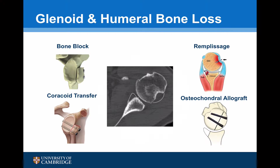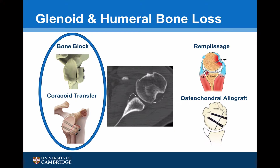The current surgical procedures available to treat significant bone loss are aimed at the anterior glenoid and/or the Hill-Sachs lesion posteriorly. On the anterior side, the most commonly performed procedures are either a straightforward bone block procedure or a coracoid transfer.